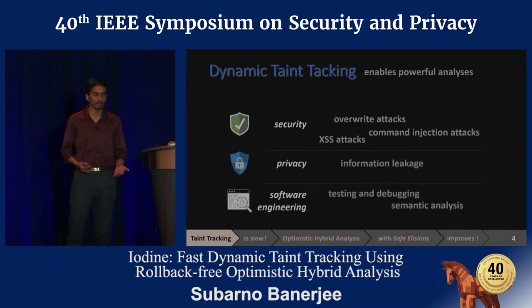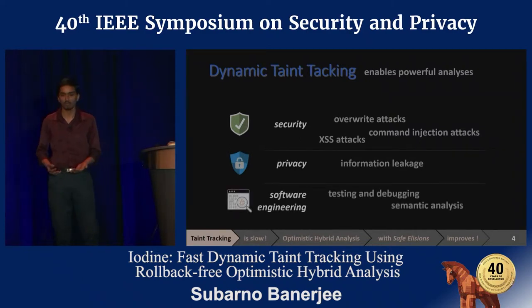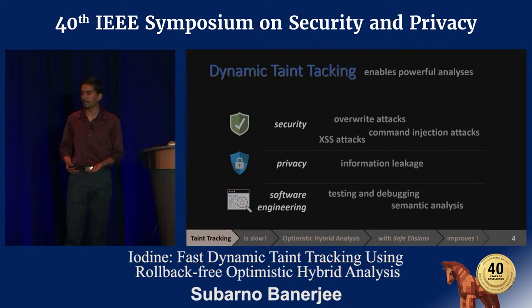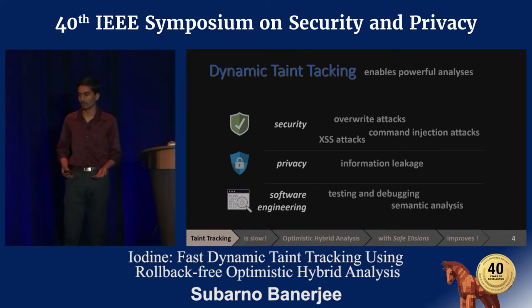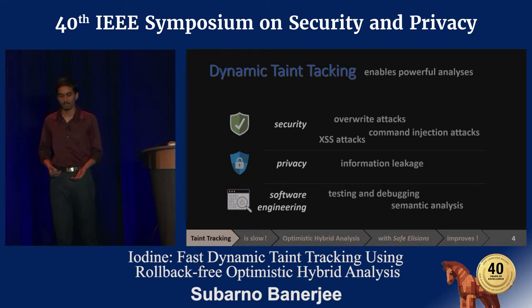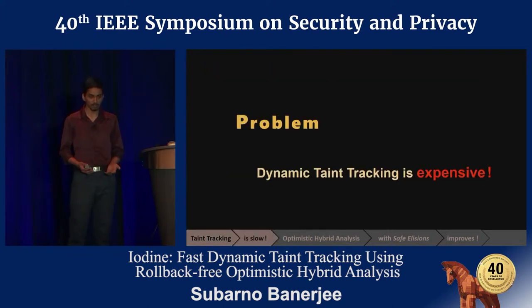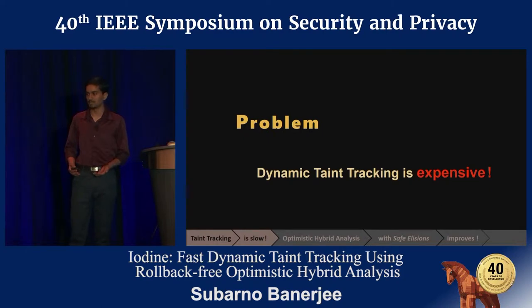For example, preventing buffer overflow, command injection, or cross-site scripting attacks, detecting information leaks, and also in software engineering for testing, debugging, and other program analysis. But despite its useful applications, live taint tracking on production systems has been challenging due to its performance overheads.